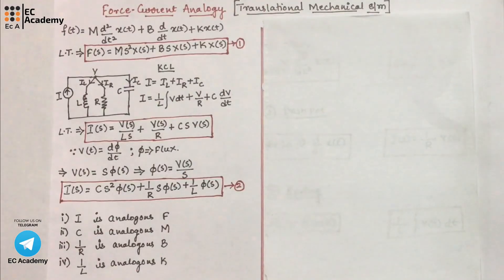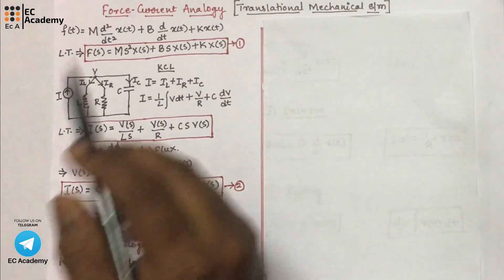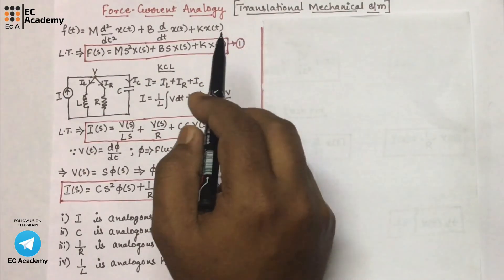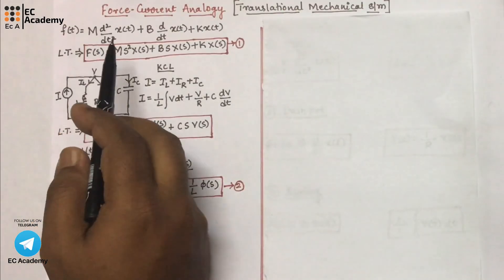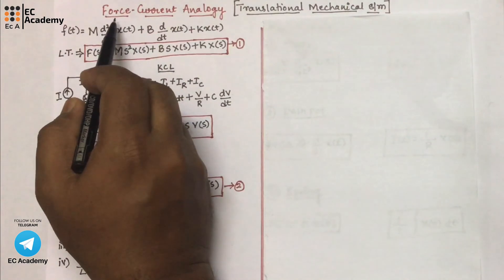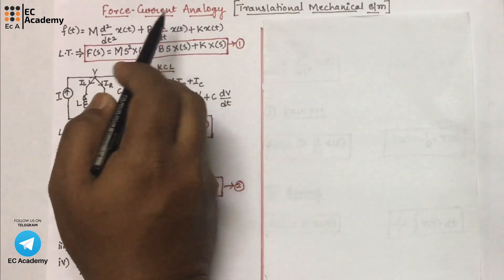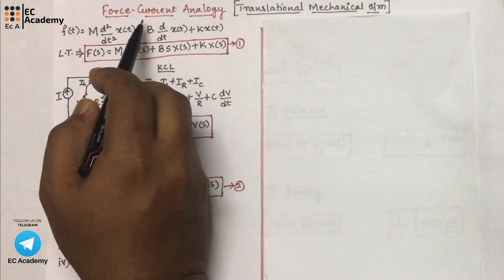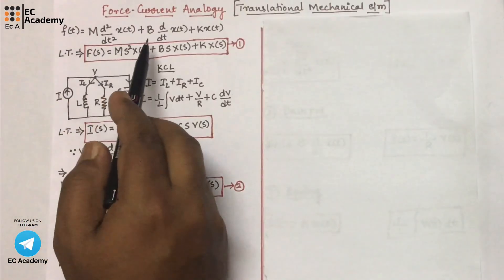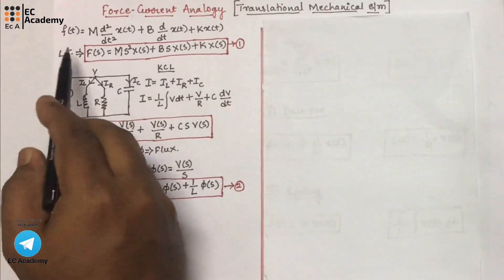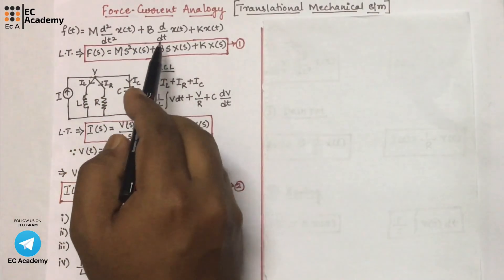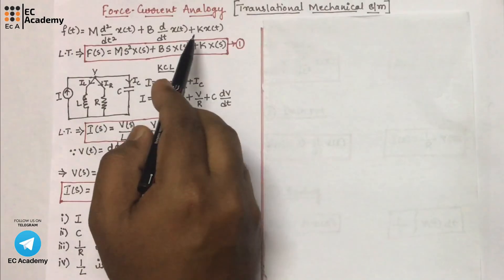We know a translational mechanical system is one in which the motion of the body will be along the straight line. For this translational mechanical system, we will write the force current analogy. In force current analogy, force will be input in the mechanical system and in the analogous electrical system, current will be the input. To understand this concept, let us consider a differential equation of a mechanical system: F(t) = m·d²x/dt² + b·dx/dt + k·x(t).